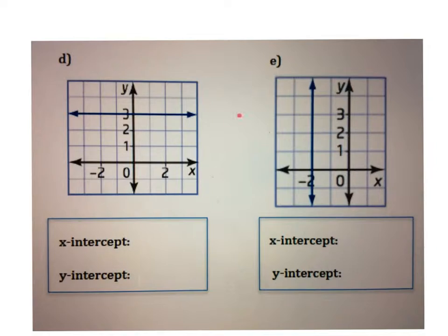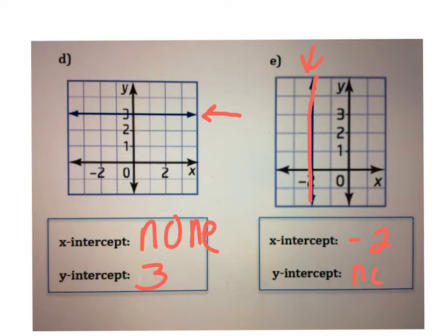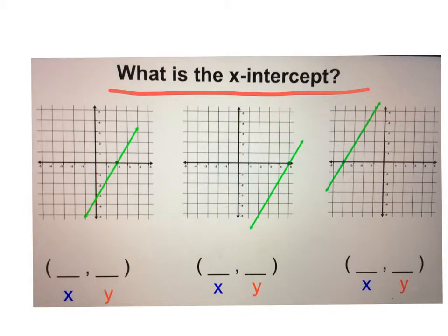Here's a complete horizontal line crossing the y-axis at 3, so that is your y-intercept. Notice the line is not hitting the x-axis at all, so there is no x-intercept. Now for the vertical line — it hits the x-axis at negative 2, so that's your x-intercept, but there is no y-intercept because the line will never hit the y-axis.